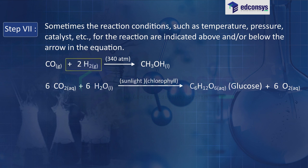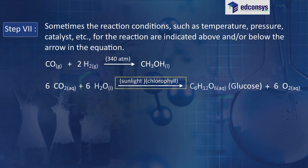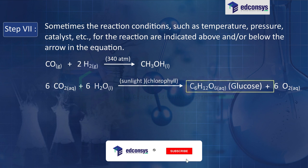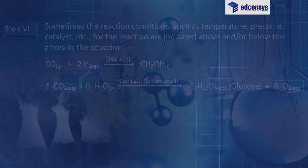For example: CO(g) + 2H₂(g) at 340 atmospheres pressure → CH₃OH(l). Also, 6CO₂(aq) + 6H₂O(l) in the presence of sunlight and chlorophyll → C₆H₁₂O₆(aq) glucose + 6O₂(aq).